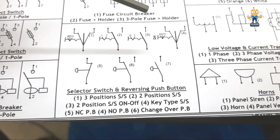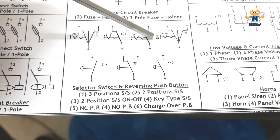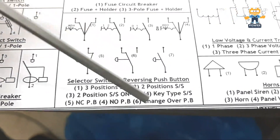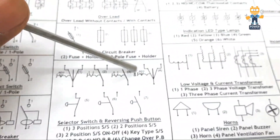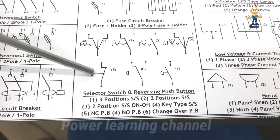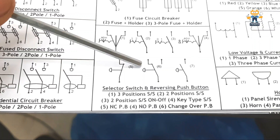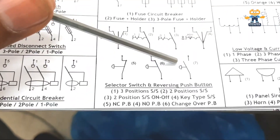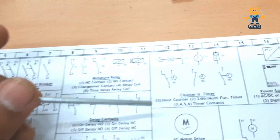Number four is actually not a normally open push button — it is a lockable type selector switch with auto, off, and hand positions. This symbol shows it is lockable type. Number four is actually a key type selector switch — this symbol shows the key. Number five is a normally closed push button. Number six is a changeover push button. Number seven is a normally open push button contact.